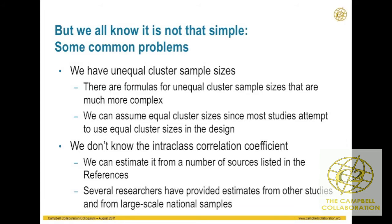Sometimes we don't get the intraclass correlation coefficient, which is the bigger problem. We can estimate it from a number of sources. Some of the more recent studies using cluster randomized trials do report it — people are more aware of its importance now — but older studies might not give it to you.